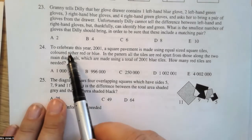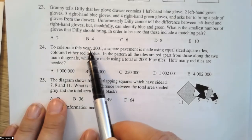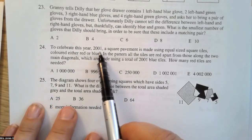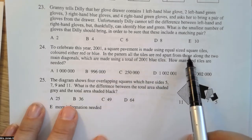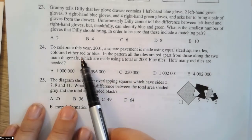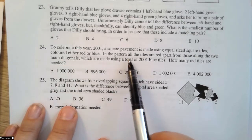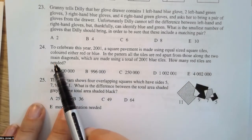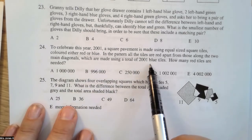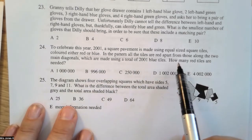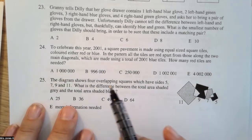Question 24. To celebrate this year, which is a past paper from 2001, a square pavement is made using equal-sized squares colored either red or blue. In the pattern, all the tiles are red apart from those along two main diagonals, which are made using a total of 2001 blue tiles. How many red tiles are needed?